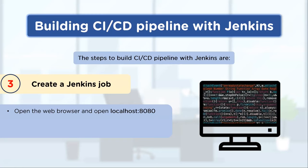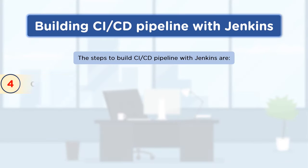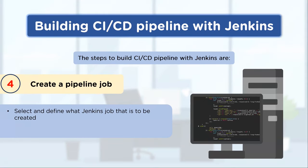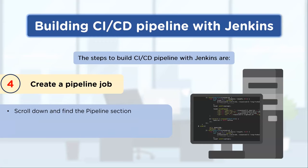Once the installation is done, you can open localhost:8080 or use the public IP address with port 8080 to access the Jenkins application. In Jenkins, you will have an option called 'Create New Job' or 'New Item.' Click on that and you will be creating a pipeline job. Select the pipeline job type, provide your custom name for the pipeline, and proceed.